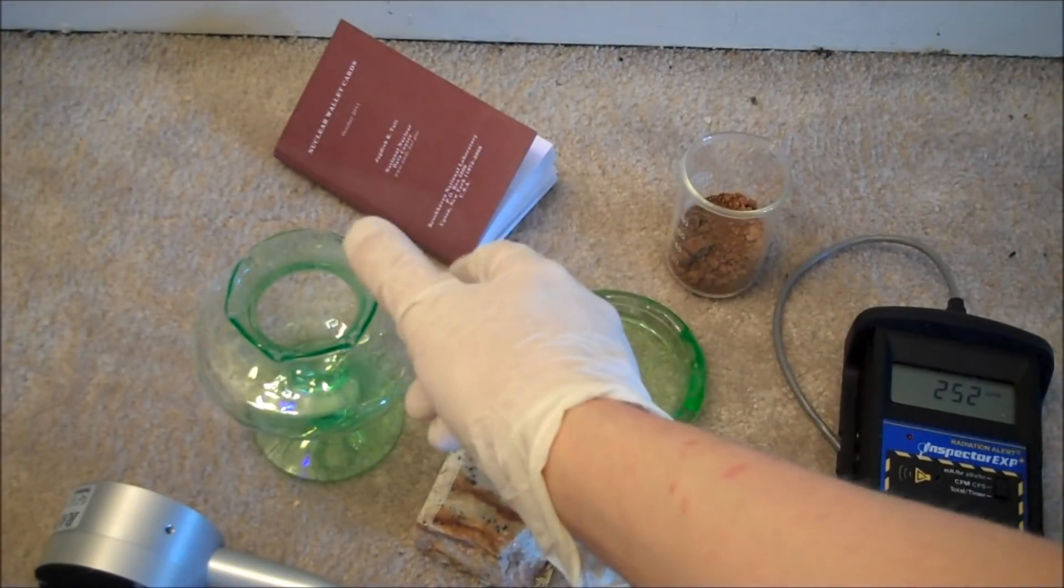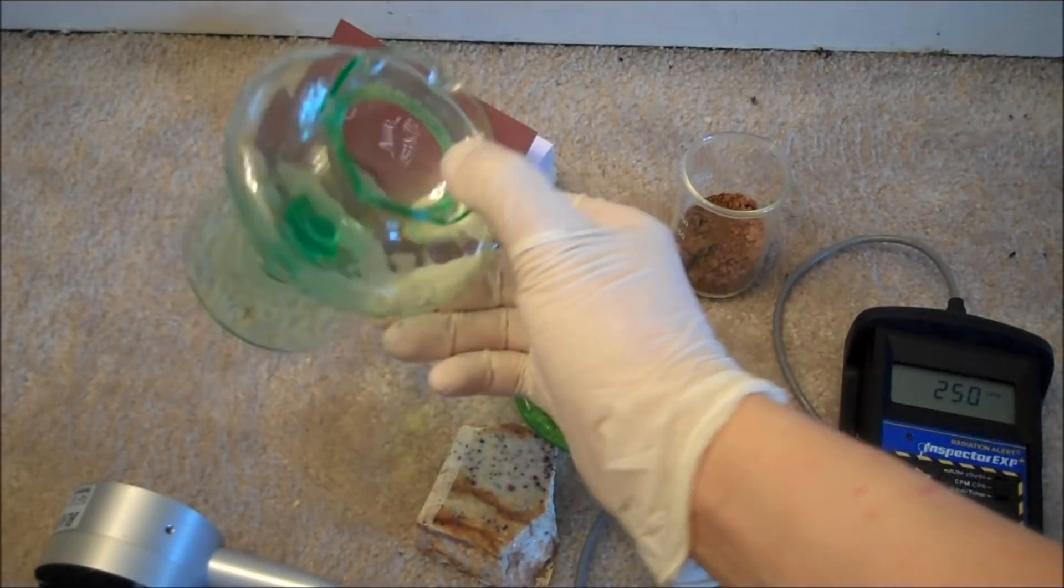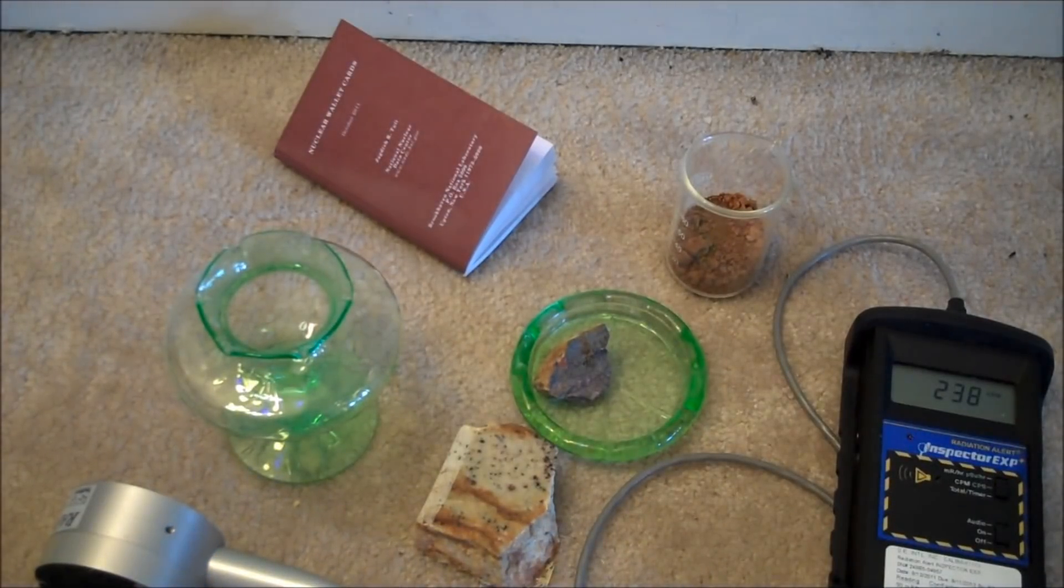For that reason, it is encouraged that you do not eat or drink off of pieces of glassware like this. They are very beautiful and can probably remain in your home relatively safely, if kept away from people, children, pets. But eating off of them is probably a very bad idea, as the uranium can leach out.